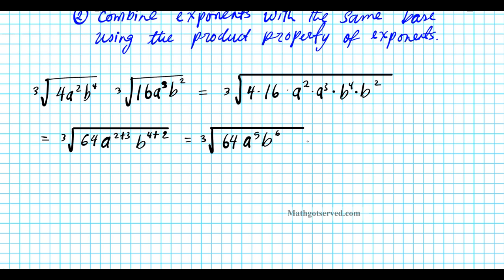Now I can express this as a rational exponent. I want to think about 64 — I can express 64 as a power. Using a factor tree: 64 breaks down as 2 times 32, 2 times 16, 2 times 8, 2 times 4, 2 times 2. So 64 is 2 to the sixth power.